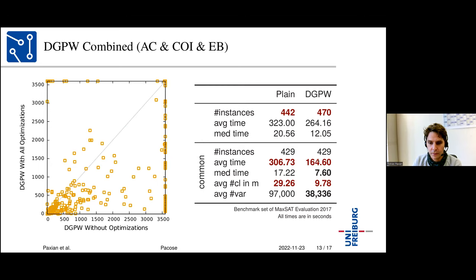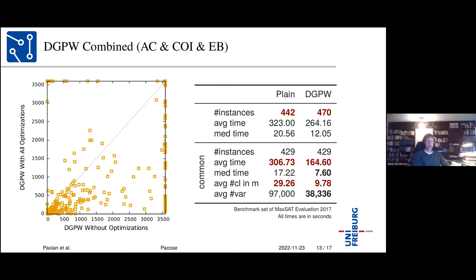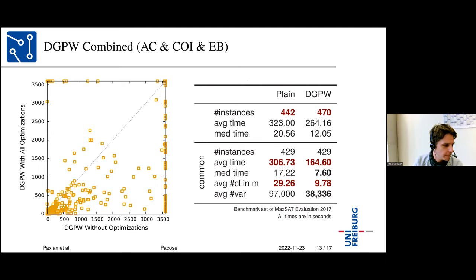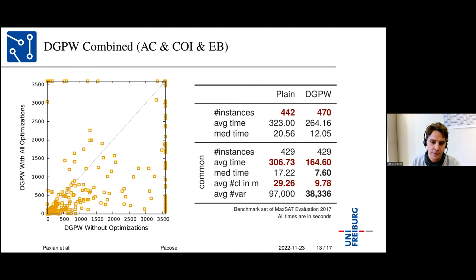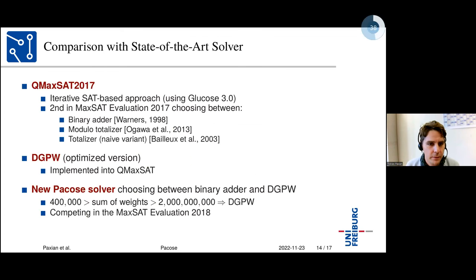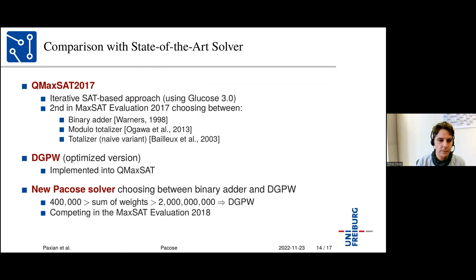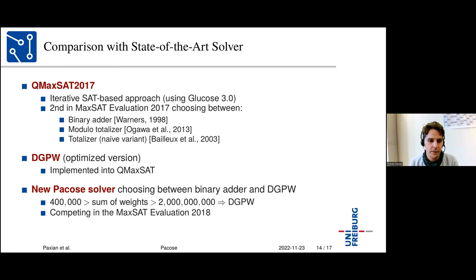The combined results show many more previously unsolvable instances are now solved. The PACOSA solver is compared with QMAXSAT 2017, which uses three encodings: binary adder, modulo totalizer, and naive totalizer. QMAXSAT was second in the MaxSat evaluation 2017. The DGPW algorithm was implemented into QMAXSAT, and the new PACOSA solver chooses between the DGPW algorithm and the binary adder of Warners. The heuristic selects the DGPW encoding when the sum of weights is smaller than 400,000 or larger than 2 billion, covering slightly more than 50% of instances.